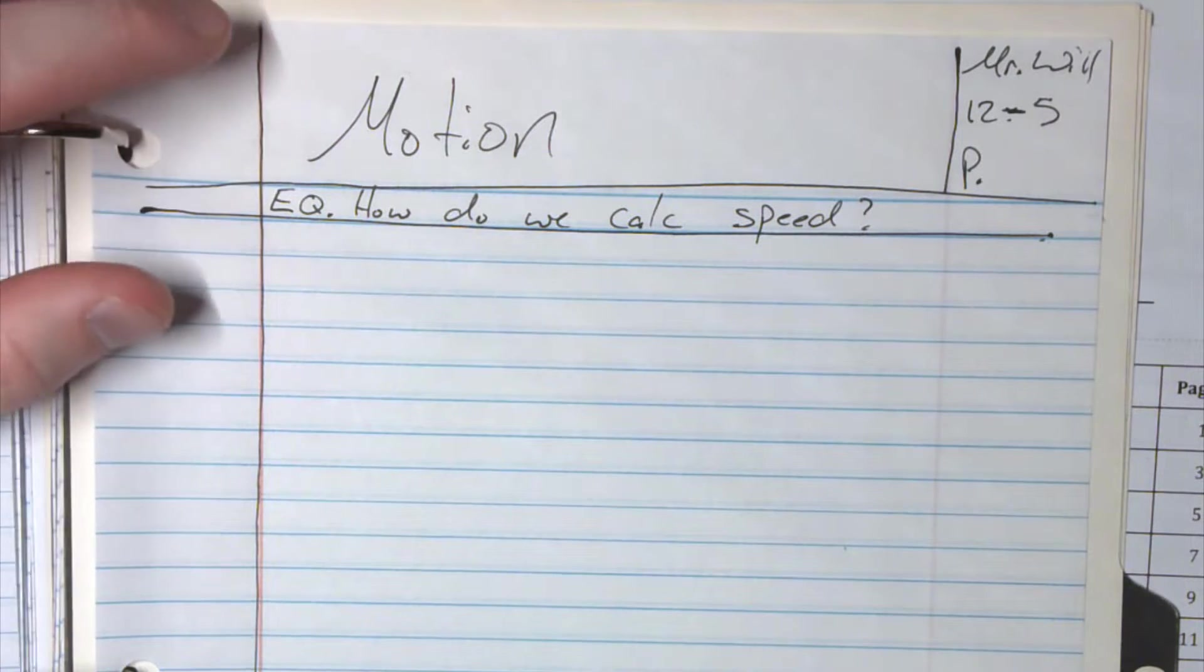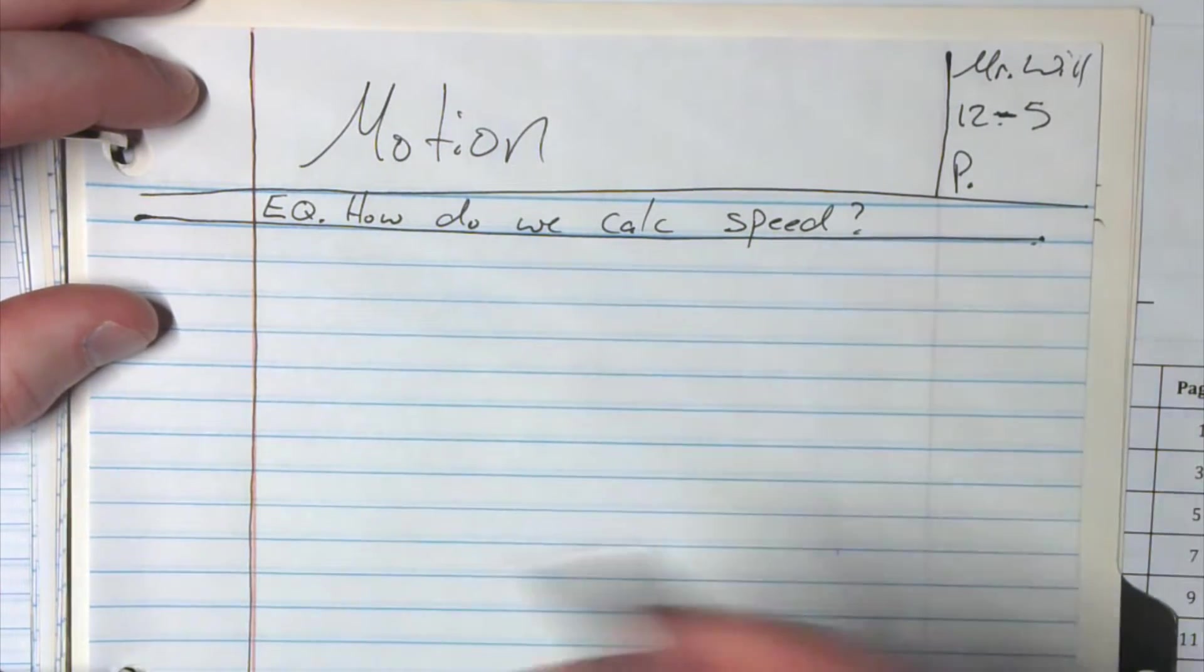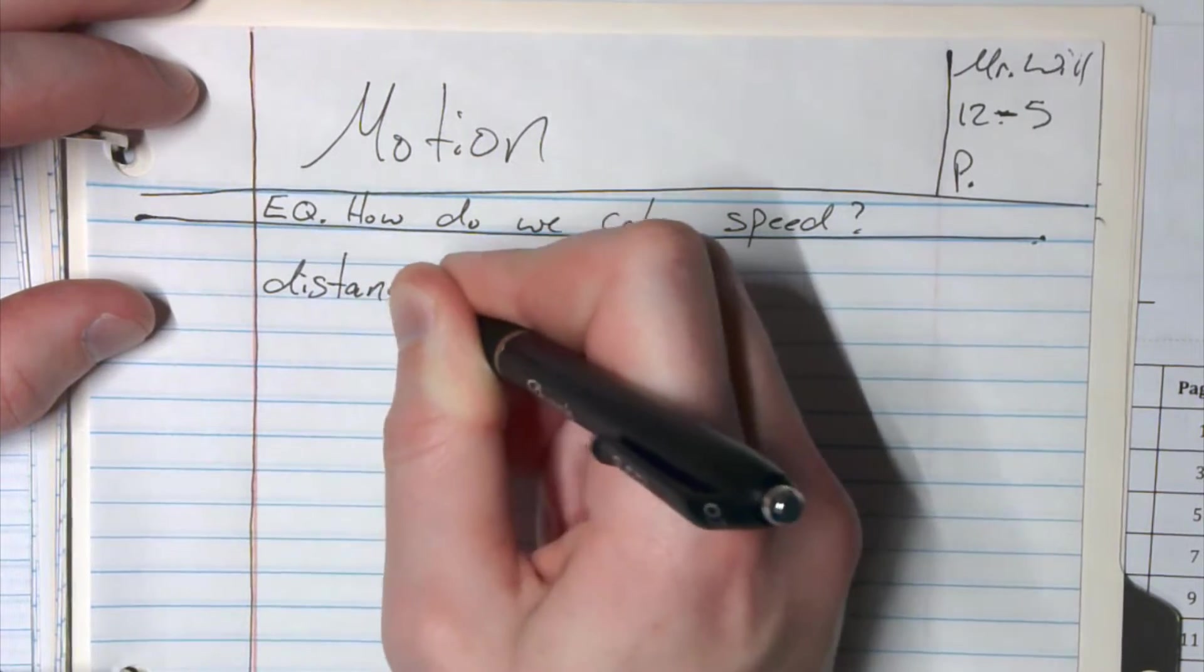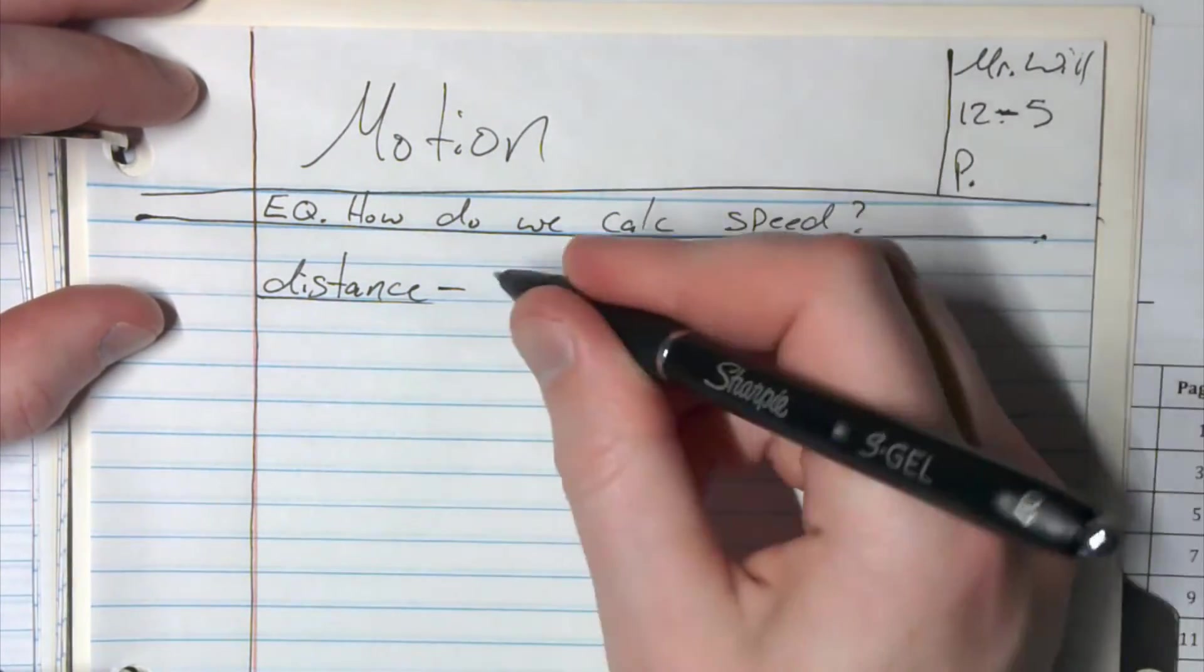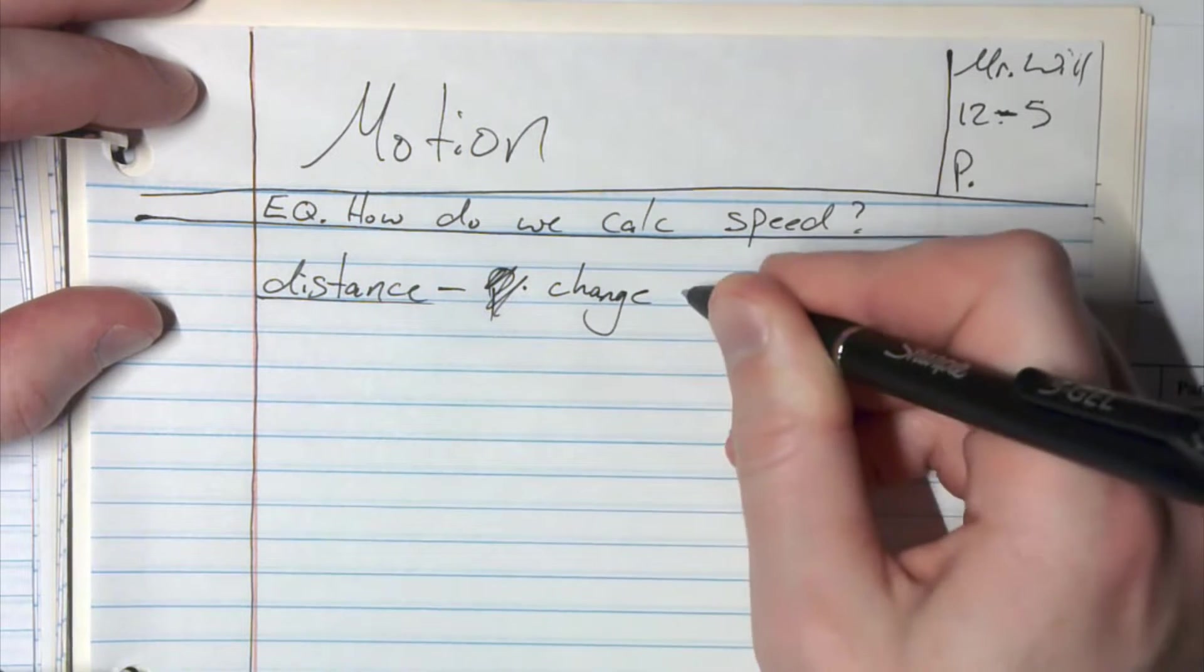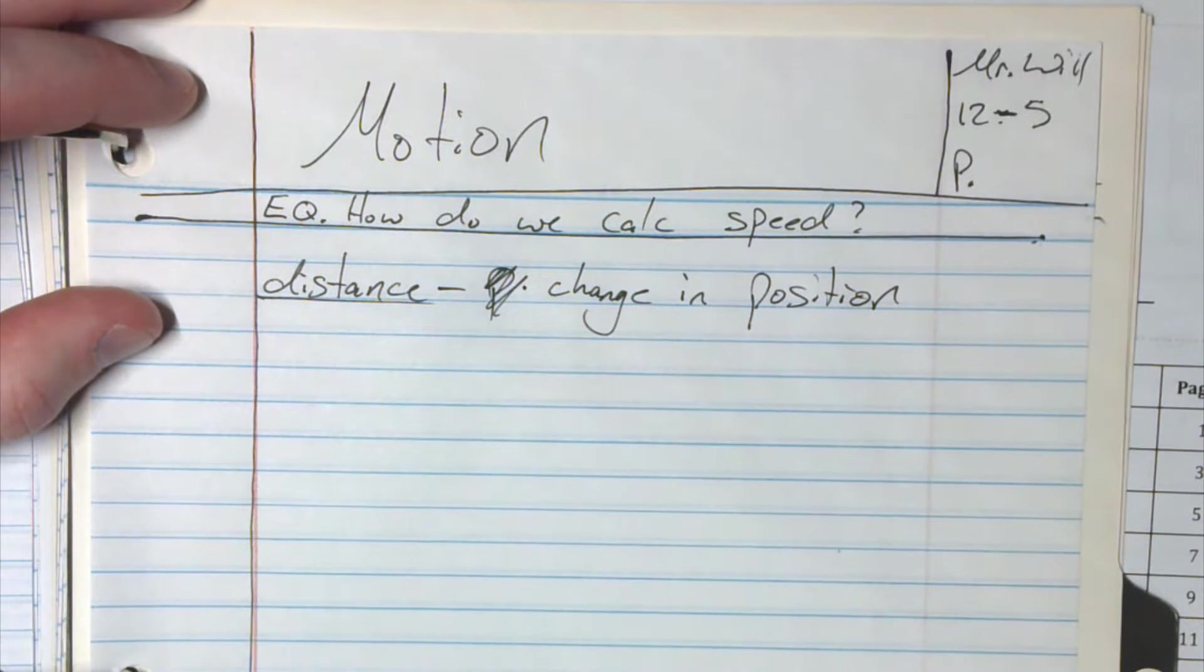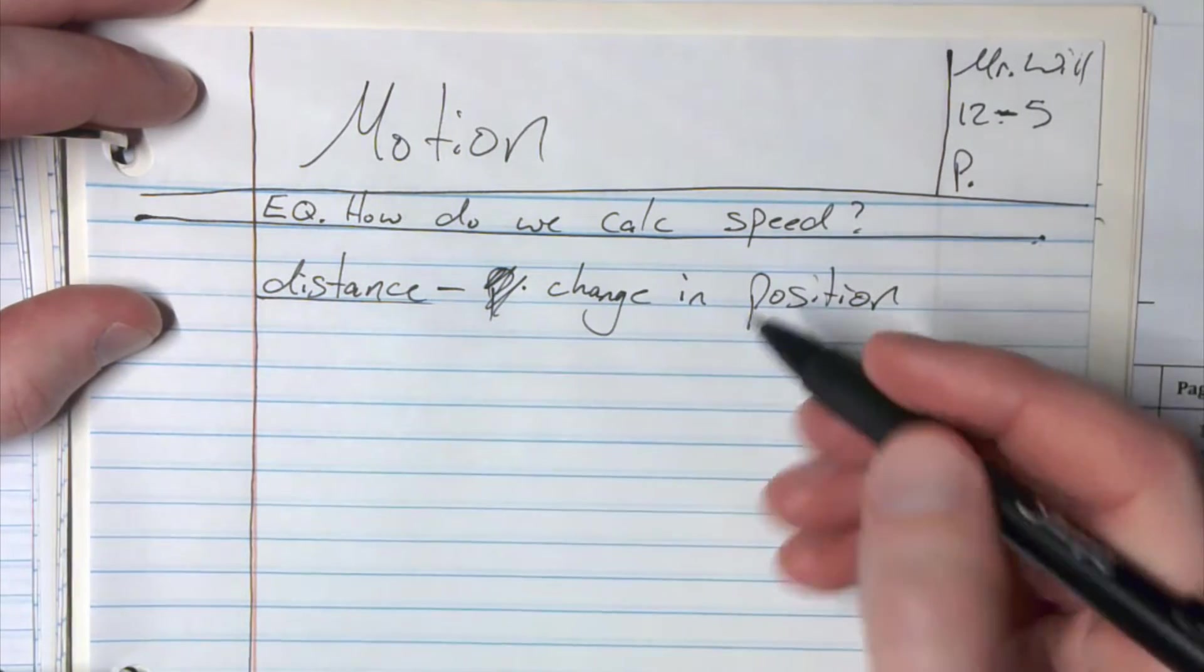First of all, in order to calculate speed and know if we're moving, we need to know what the distance is. I know it's super basic, but we got to start off somewhere. So distance - what is distance? Distance is just a change in position. Traveling from point one to point two, so you change position, you've got a distance. So from here to there, how far is that? Pretty straightforward.